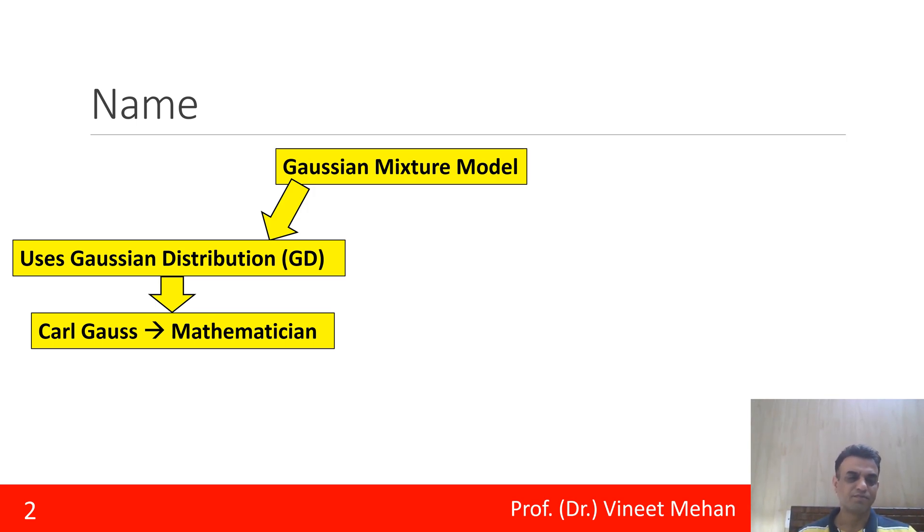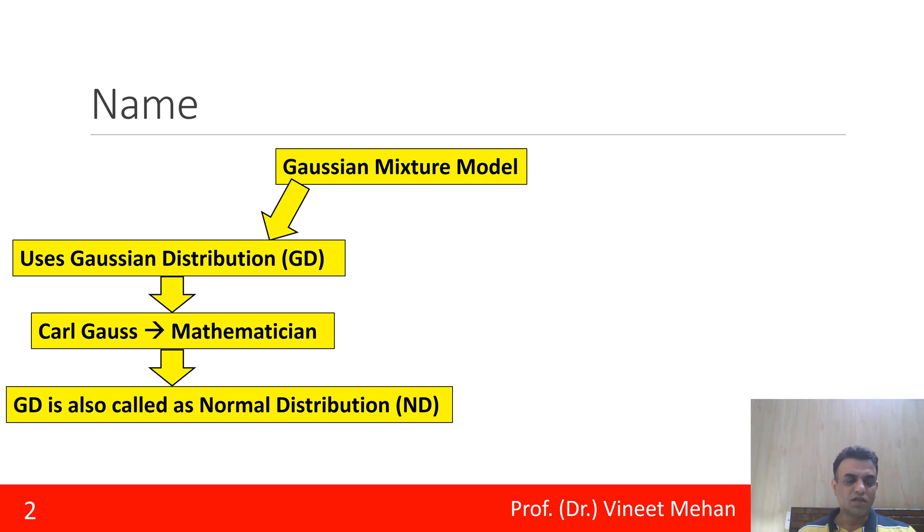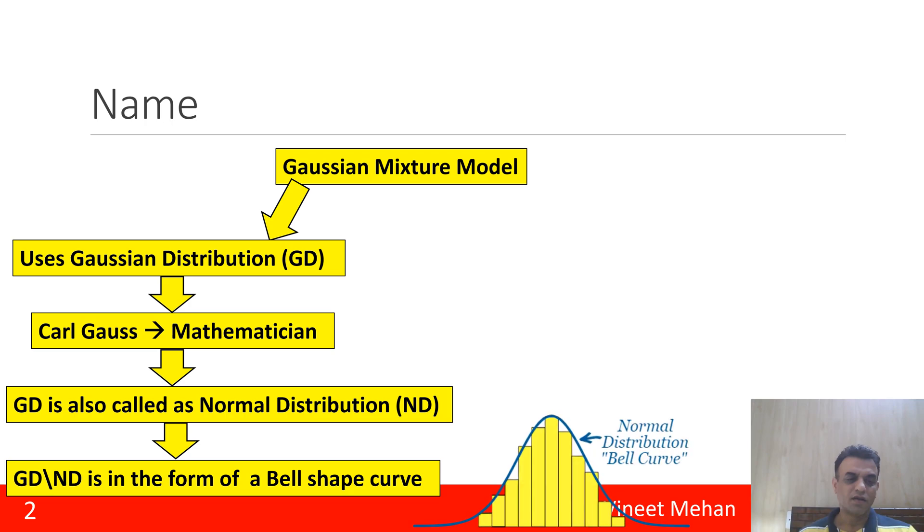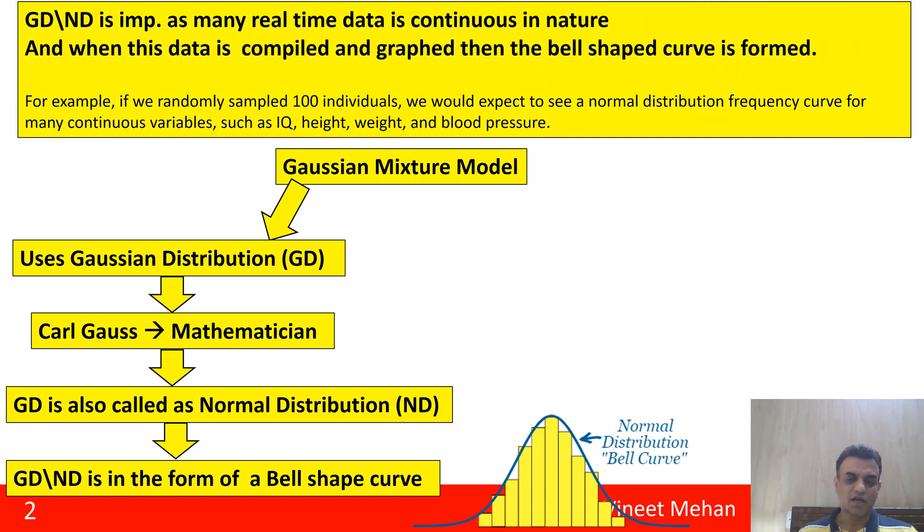It is also called as Normal Distribution, and whether we call it Gaussian Distribution or Normal Distribution, it is in the form of a bell-shaped curve. You can see in this diagram that a particular curve is formed - that is why it is a bell-shaped curve.